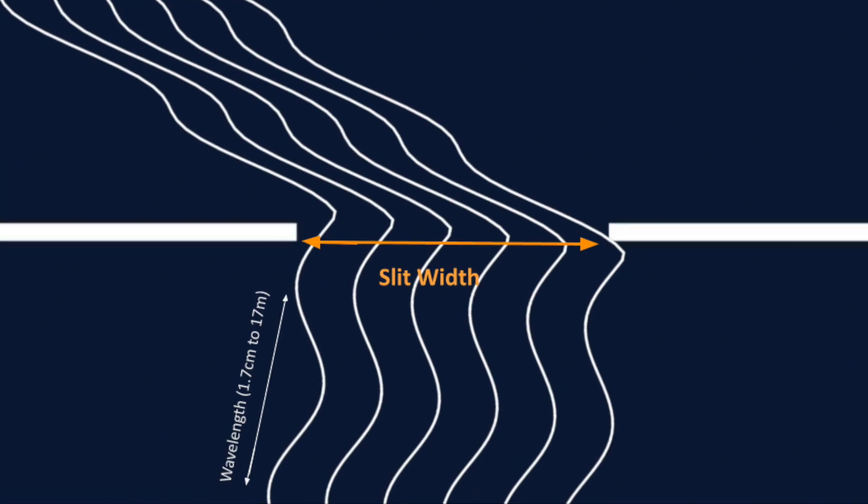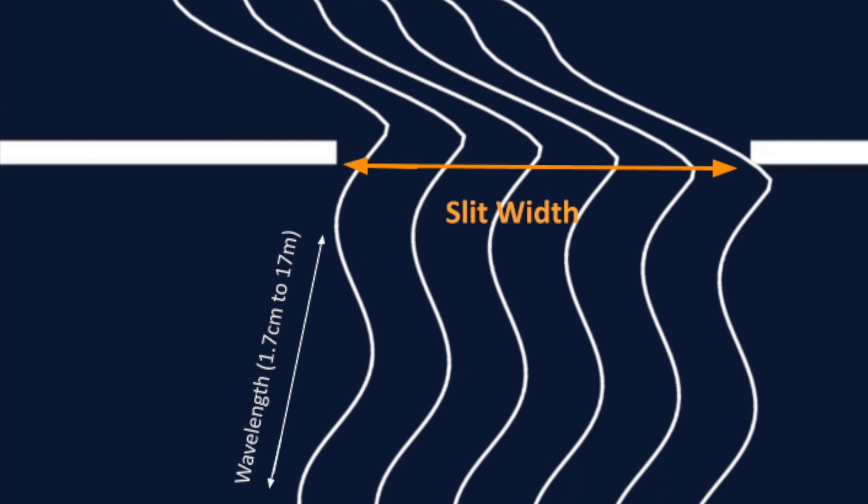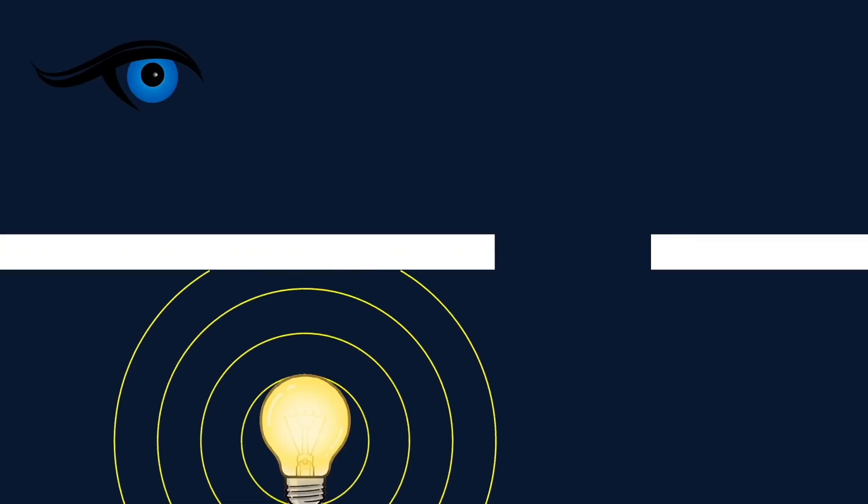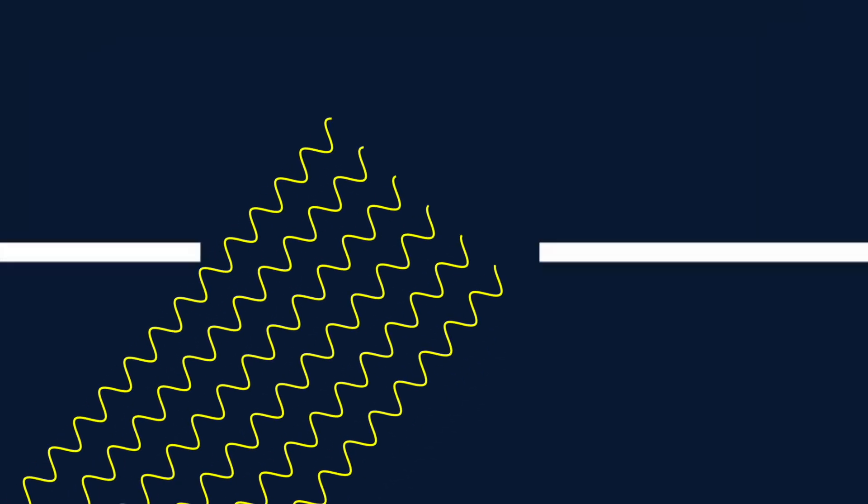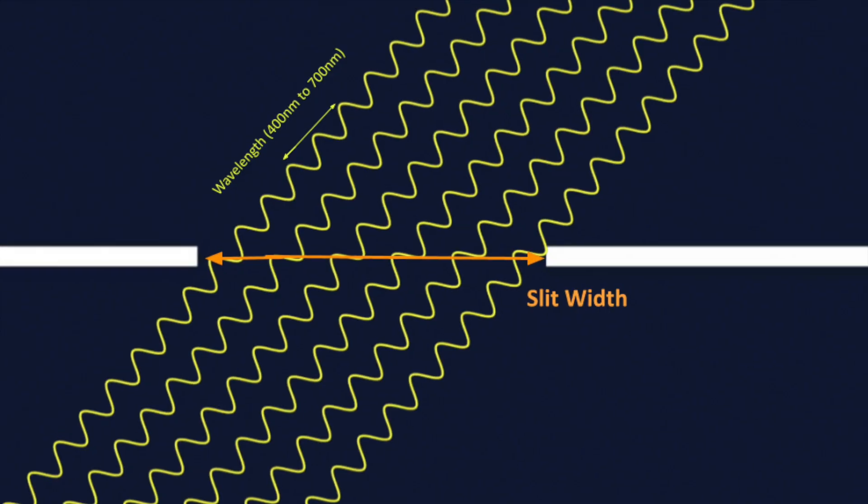Sound's long wavelength is a perfect match for everyday objects forcing it to bend. Light's wavelength is in nanometers much smaller than objects around us so light does not bend unless your openings are nanometers wide.